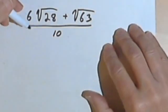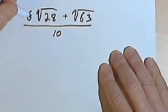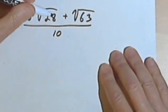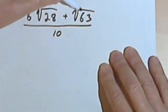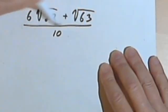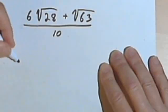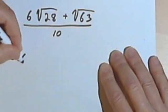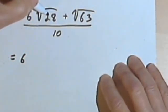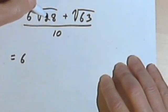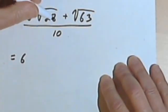This one looks a little more complicated, but it's basically the same principle. So I've got 6 times the square root of 28, plus the square root of 63, and all that's over 10. So let's start with dealing with the radicals first. I'm gonna have 6, I want to simplify this square root of 28, and I can divide it by 4. So this will become the square root of 4 times 7.